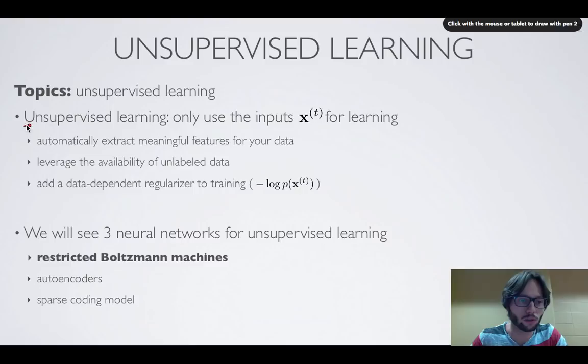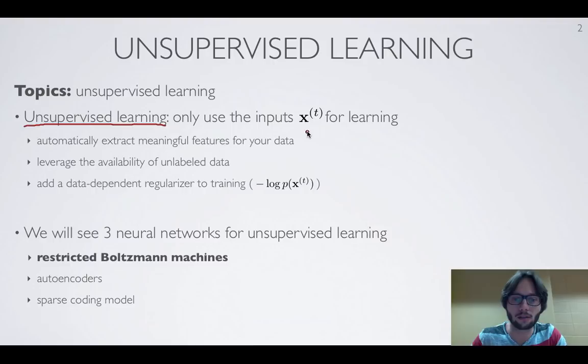Now we're going to talk about a neural network that performs unsupervised learning. That is, it's going to learn something about the data based on a training set that only contains input vectors.